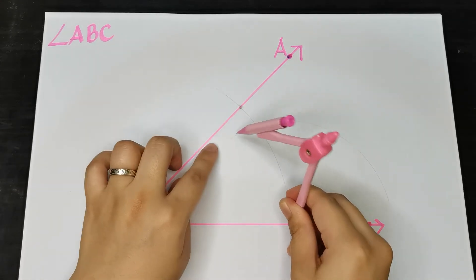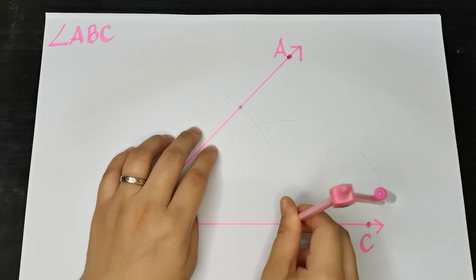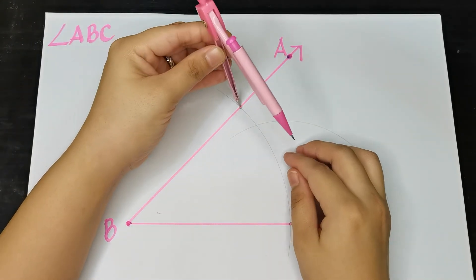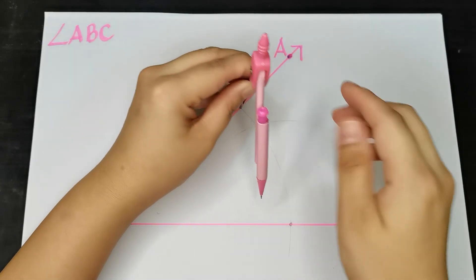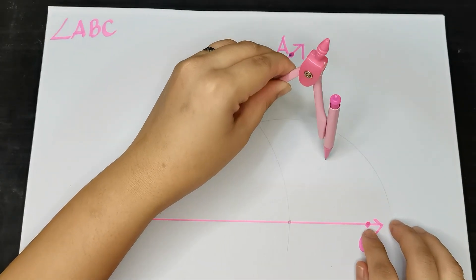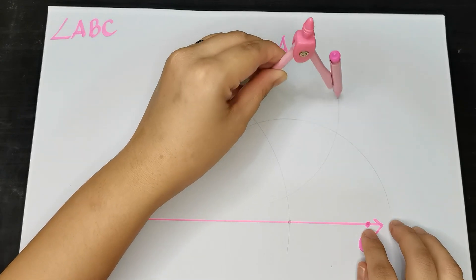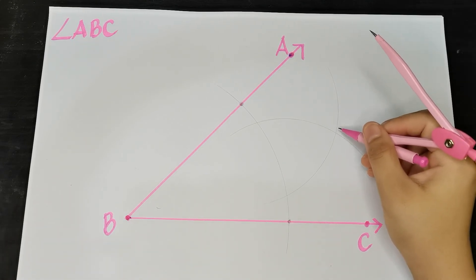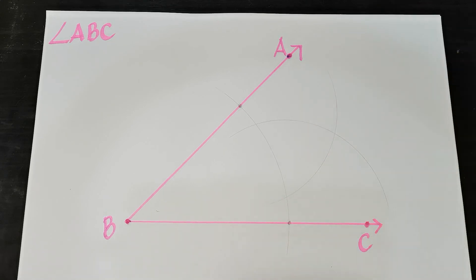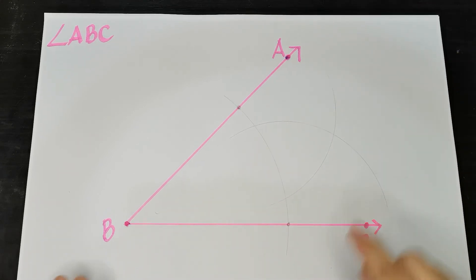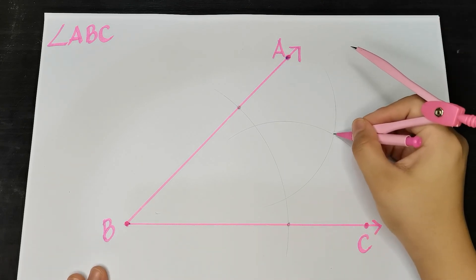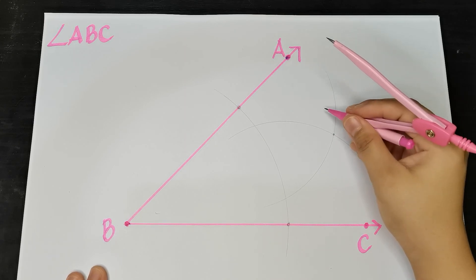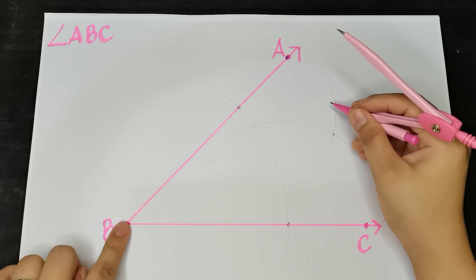Without changing the span on the compass, place the compass point on the other intersection and swing it. What do you observe? We have a new intersection point. The two small arcs intersect, and that intersection is here at this point.